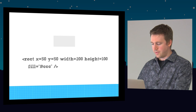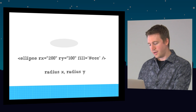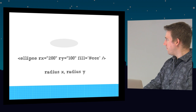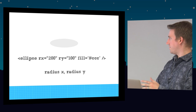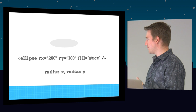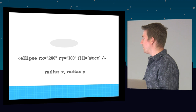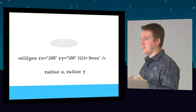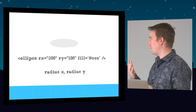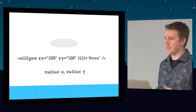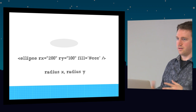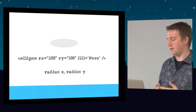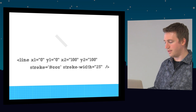Rectangle uses the same concept — x, y with width and height. Ellipse is interesting: rx is the radius of x and ry is the radius of y. That's how you get the wider-than-tall ellipse shape.